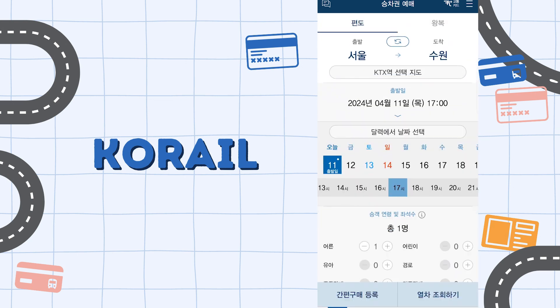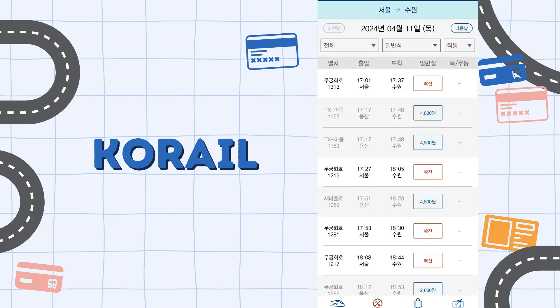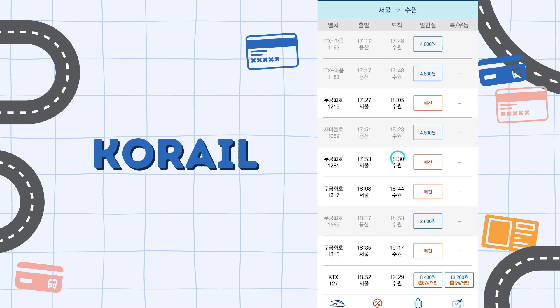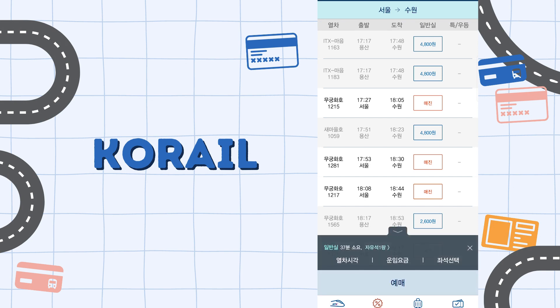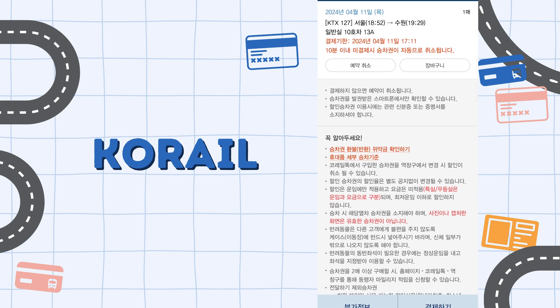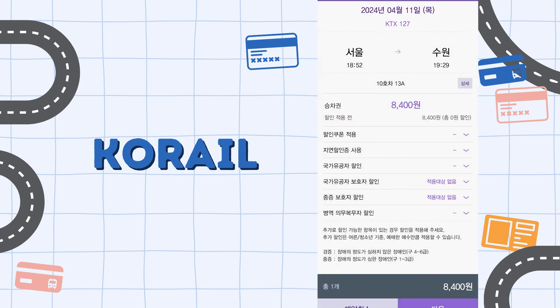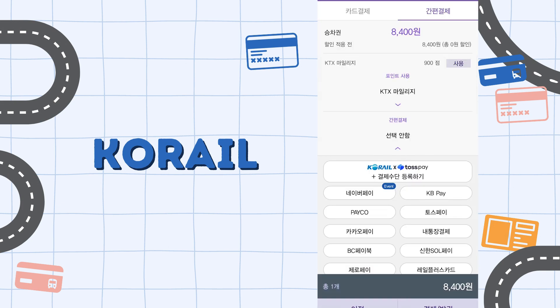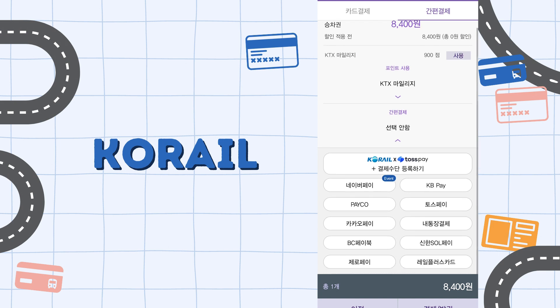Next, select the station you are heading from and the destination. Then select the date, time, and number of passengers, and click the button on the bottom right. Select the trip you want to book and click 예매. Click 결제하기 to make your payment, then press 다음. Finally, select your method of payment and complete your booking.